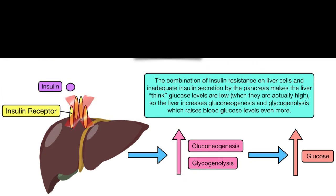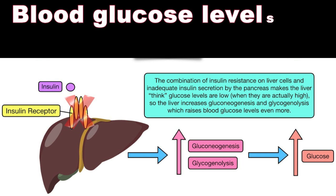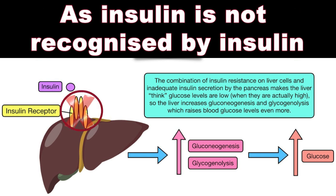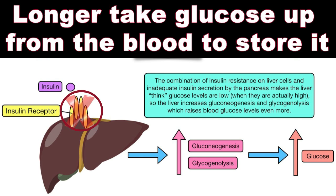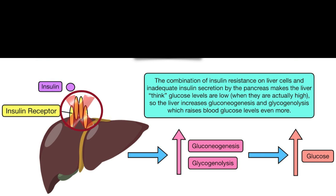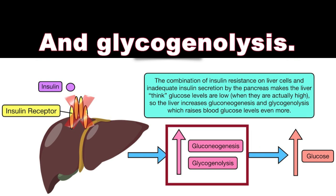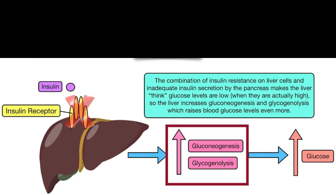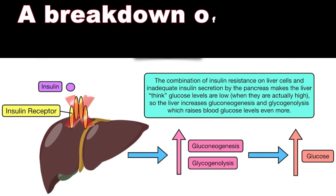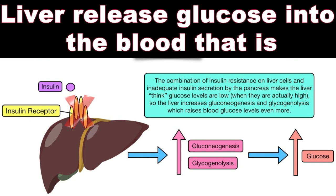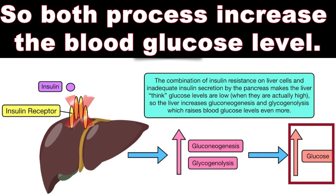The combination of insulin resistance and inadequate insulin secretion leads to a further increase in blood glucose levels through the liver. As insulin is not recognized by insulin receptors on the liver, the liver can no longer take up glucose from the blood to store it. This causes the liver to inappropriately respond as if blood glucose is low, resulting in increased gluconeogenesis — the formation of glucose in the liver — and glycogenolysis, the breakdown of stored glycogen, which releases glucose into the blood. Both processes increase blood glucose levels.